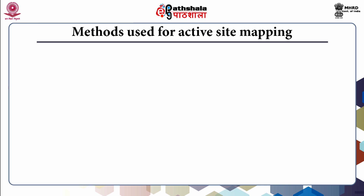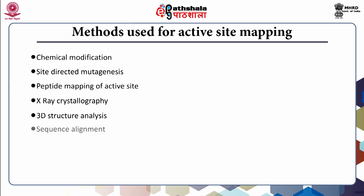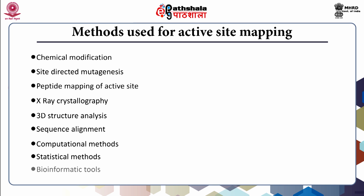The following methods are used for active site mapping: chemical modification, site-directed mutagenesis, peptide mapping of active site, X-ray crystallography, 3D structure analysis, sequence alignment, computational methods, statistical methods, and bioinformatic tools.